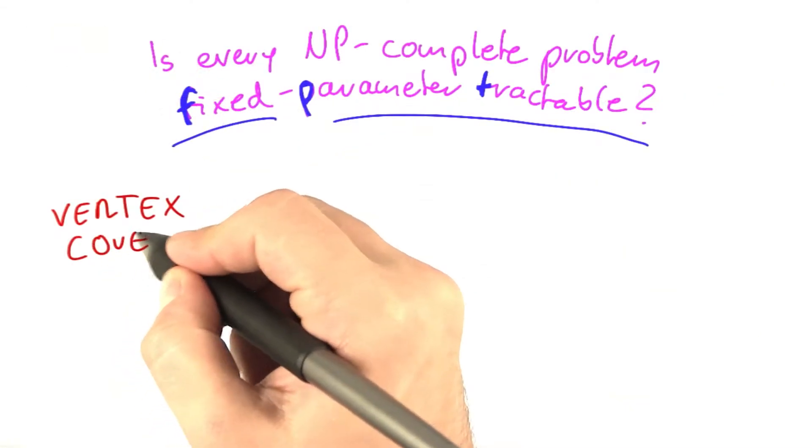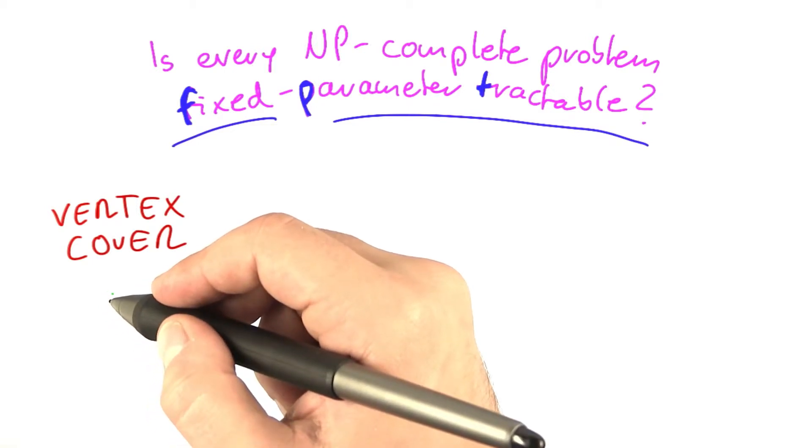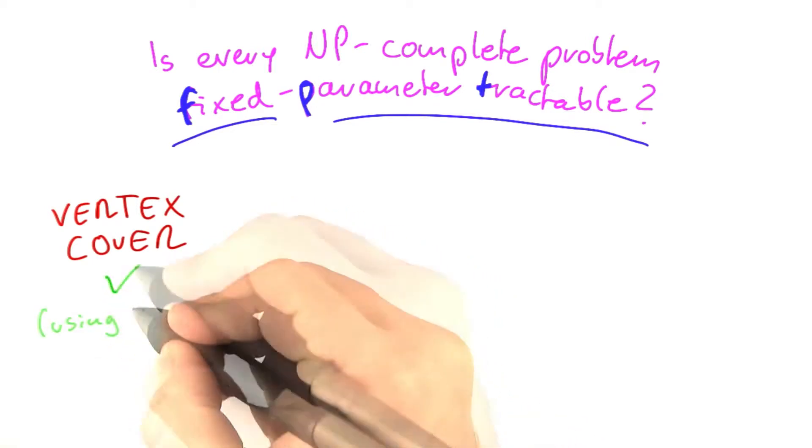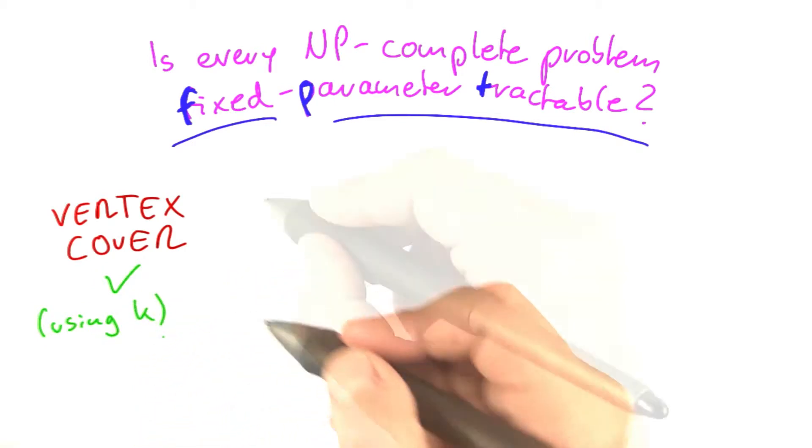So for vertex cover, we have just shown that if you use the size of the solution as a parameter, then yes, this problem is fixed parameter tractable using k. And by k, I mean the size of the solution, of course.